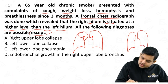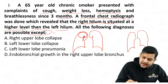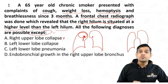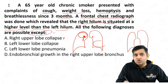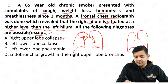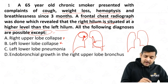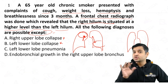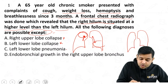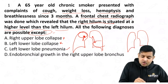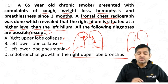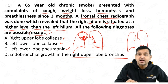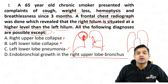Right upper lobe collapse: if there is collapse of the right upper lobe, the right hilum will be pulled up — so this could be the cause. Left lower lobe collapse: if the left lower lobe undergoes collapse, the left hilum will pull down — that could also be the cause. Left lower lobe pneumonia: pneumonia is a consolidation, it does not change the volume. Endobronchial growth in the right upper lobe bronchus: if the upper lobe bronchus has a growth, it will lead to collapse of the right upper lobe and the right hilum will be pulled up.